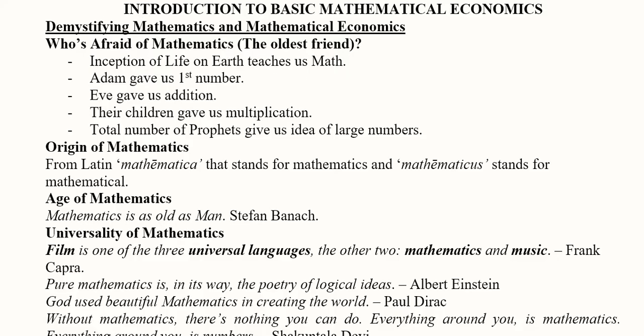Mathematics is basically the oldest friend of ours because since the beginning of life on earth, we had one human being who was Adam — that was the first number. Then we had Eve, and then there was addition: one plus one. Then their children gave rise to the process of multiplication. Mathematics is all around us since the beginning of mankind, and all the prophets were also of a certain number, representing some quantity — and hence we were talking mathematics even in primitive times.